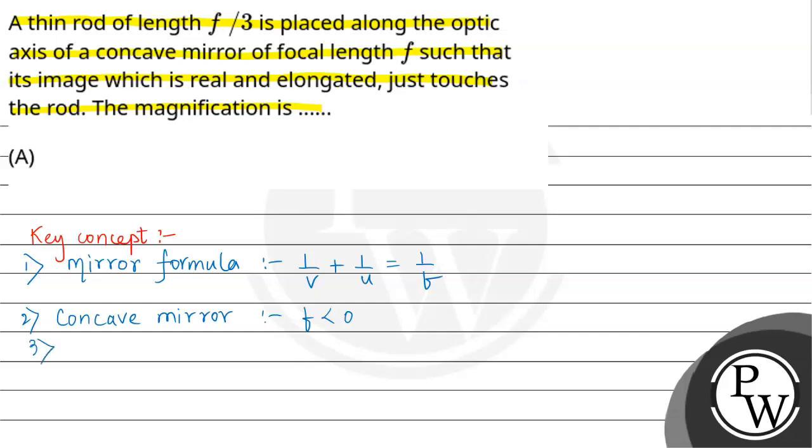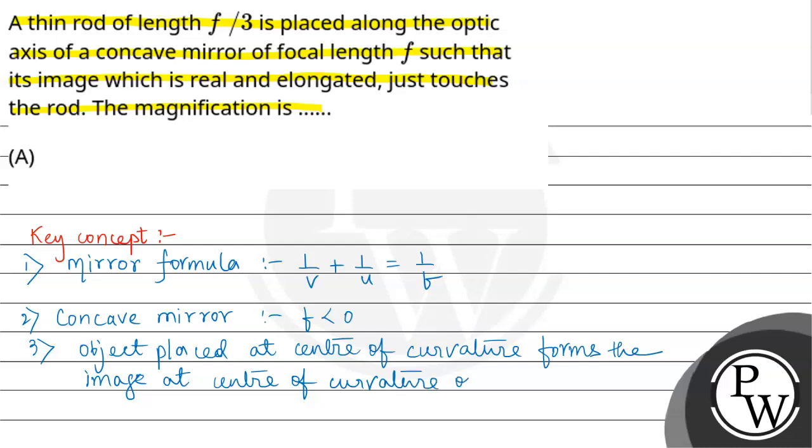Next, when an object is placed at the center of curvature, it forms an image at the center of curvature, and it is of the same size. The object size and image size are the same.